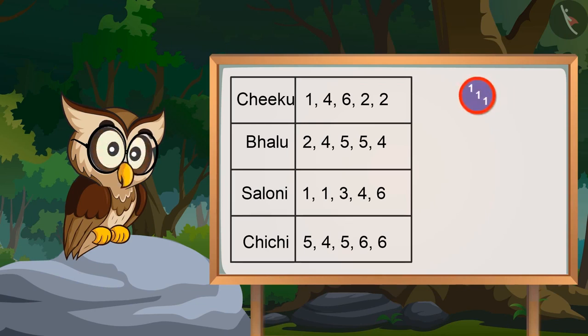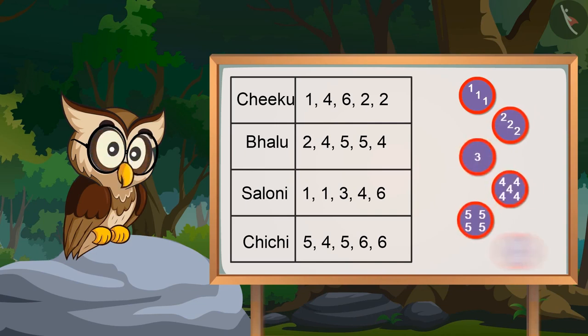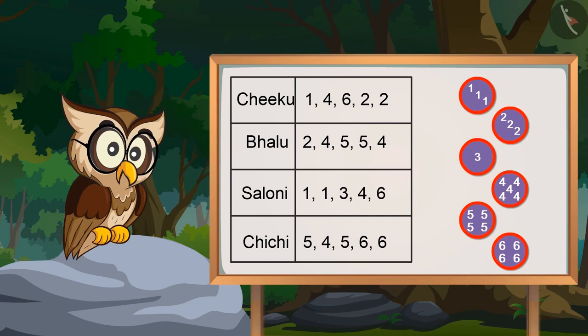We got one for three times. We also got two for three times. And like this we can write all four different numbers.